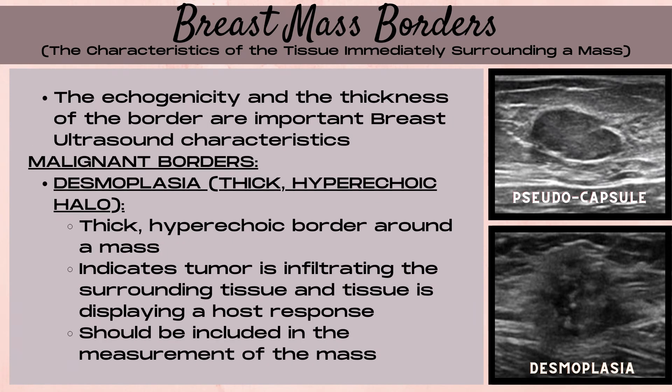Now let's look at malignant borders. There is one type of malignant border on a breast ultrasound, and this is known as desmoplasia — a thick, hyperechoic halo around a mass. It will have hazy, irregularly shaped borders with angular margins. It will be hard to delineate where some of the margins of the halo are, and this indicates that the tumor is infiltrating the surrounding tissue and the tissue is fighting back via a host response. Note that when measuring a mass and desmoplasia is visualized, the desmoplasia should be included within the measurements of the mass.